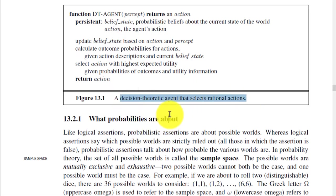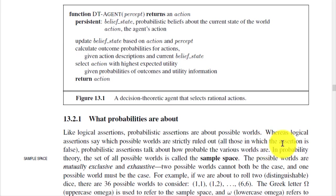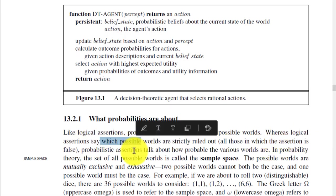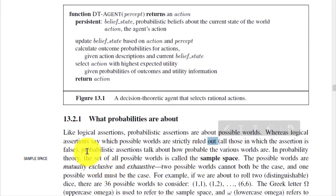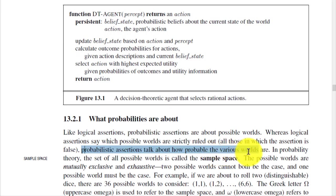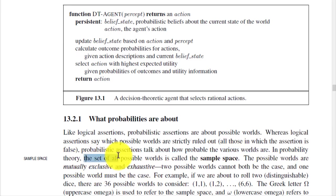What are probabilities about? Like logical assertions, probability assertions are about possible worlds. Whereas logical assertions say which possible worlds are strictly ruled out, probability assertions talk about how probable the various worlds are.